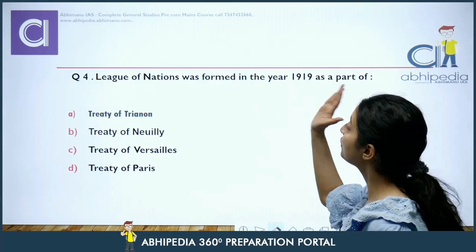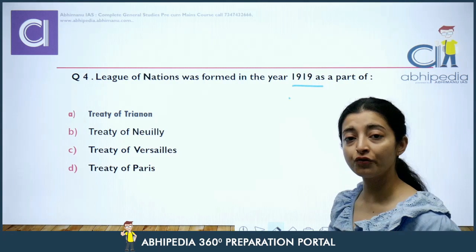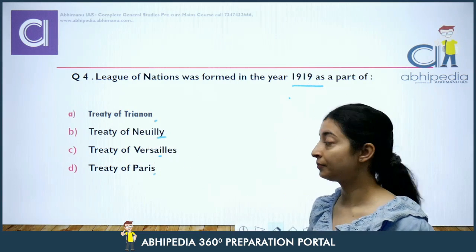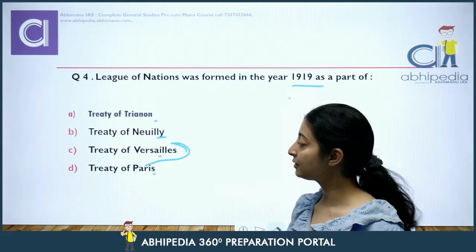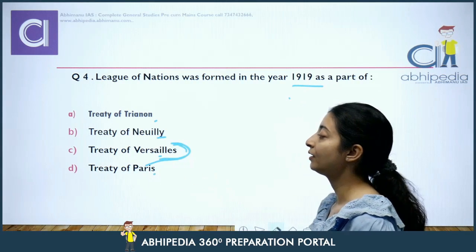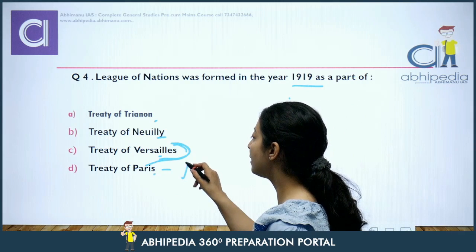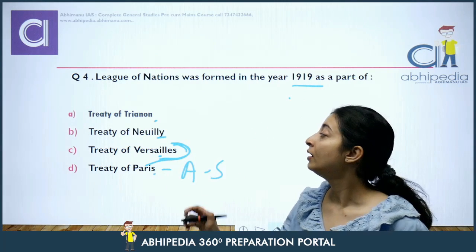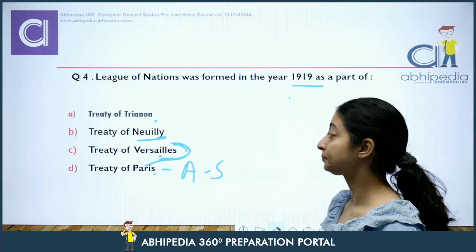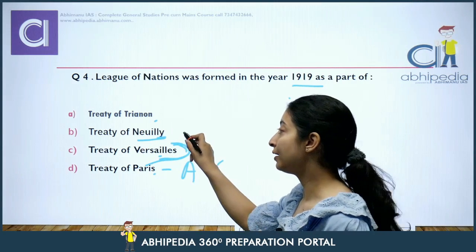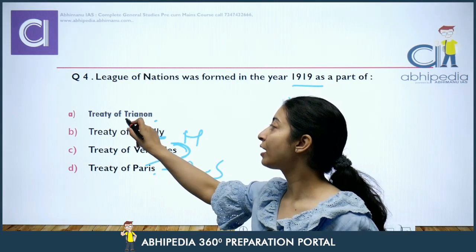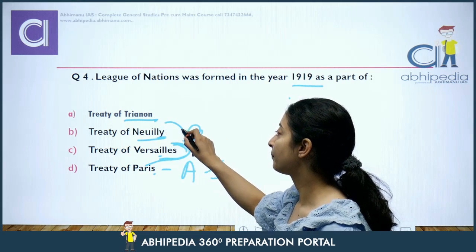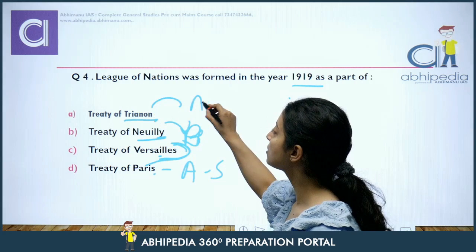Last question: The League of Nations was formed in 1919 as a part of which treaty? Options: Treaty of Paris, Treaty of Versailles, Treaty of New Delhi, Treaty of Trianon. The answer is Treaty of Versailles. The Treaty of Paris was signed in 1898 after the American-Spanish War. The Treaty of Neuilly was between Allied powers and Bulgaria. The Treaty of Trianon was between Allied powers and Hungary.